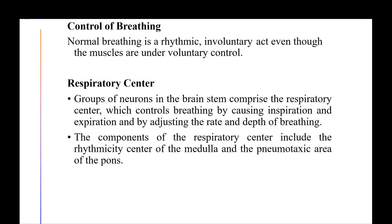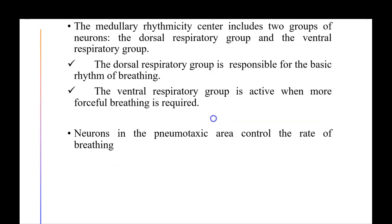Normal breathing is a rhythmic, involuntary act even though the muscles are under voluntary control. Groups of neurons in the brainstem make up the respiratory center, which controls breathing by adjusting rate and depth. The respiratory center includes the rhythmicity center of the medulla and the pneumotaxic center of the pons. The medullary rhythmicity center has two neuron groups: the dorsal respiratory group, responsible for basic breathing rhythm, and the ventral respiratory group, active during more forceful breathing. Neurons in the pneumotaxic area control the rate of breathing.